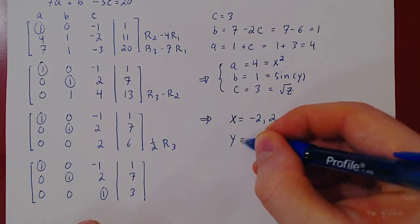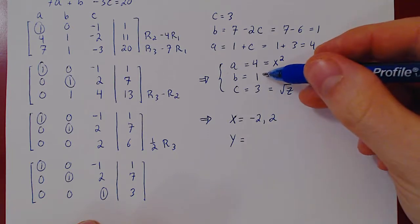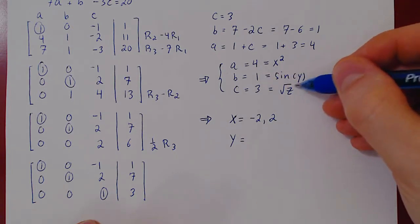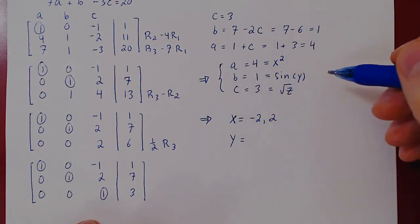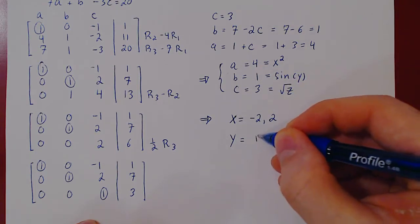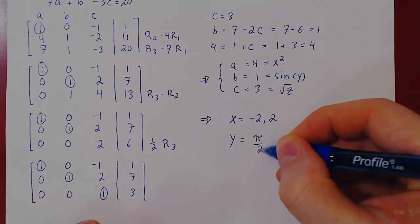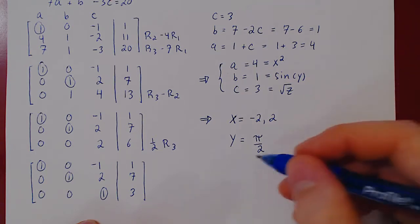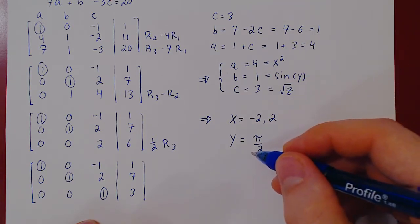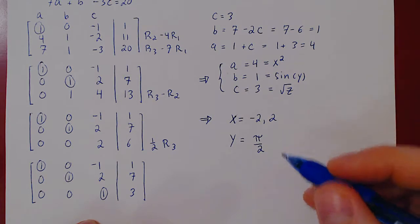Y is a bit more interesting, as sine of y equals 1. So we're looking for angles where the sine is equal to 1. Well, if you think of it, a natural choice is pi over 2.